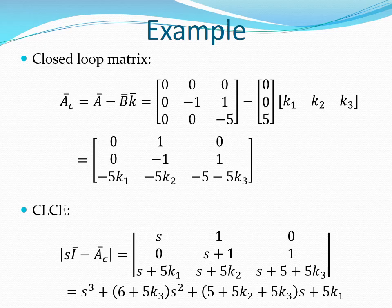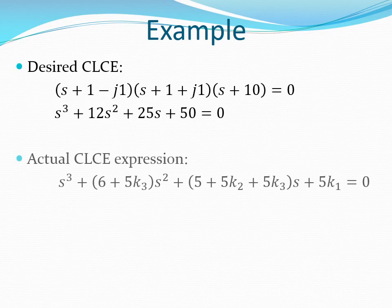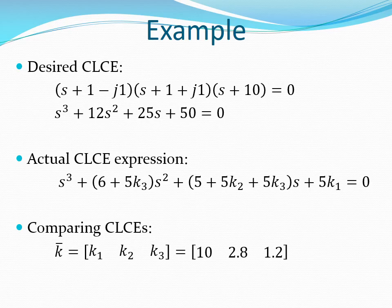We put unknowns K1, K2, and K3 in the matrix K as shown. From the closed loop A matrix, the actual CLCE of the system works out as S³ + (6 + 5K3)S² + (5 + 5K2 + 5K3)S + 5K1 = 0. From the desired closed loop poles, the desired closed loop characteristic equation works out as S³ + 12S² + 25S + 50 = 0. I am sure you can figure out how we get the required CLCE from the required pole positions.